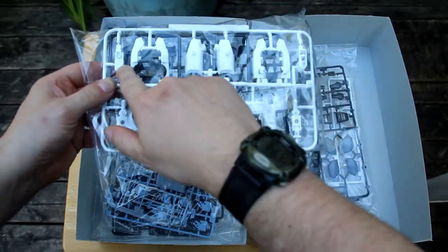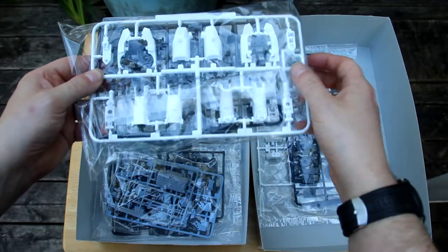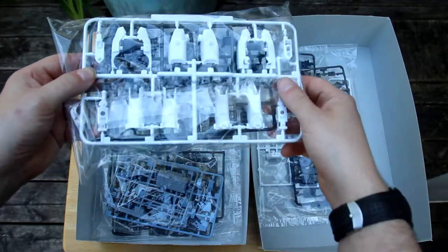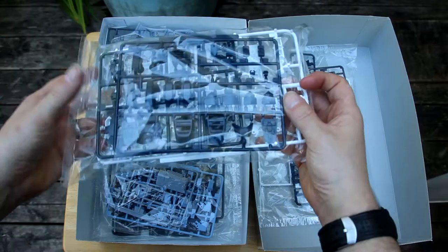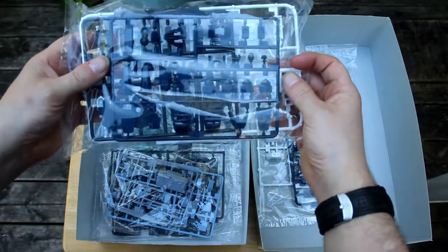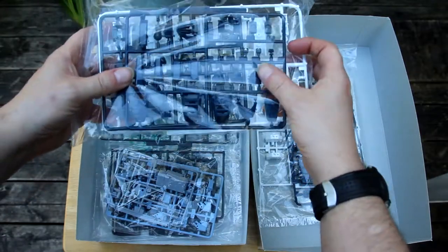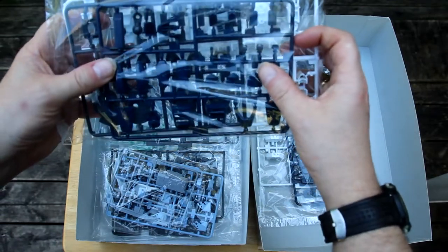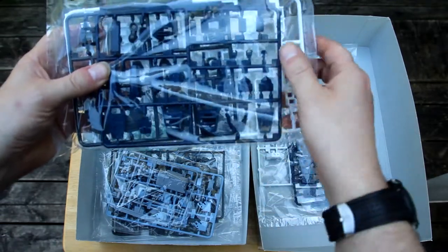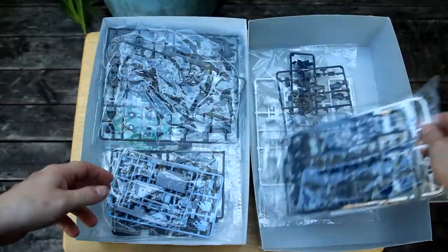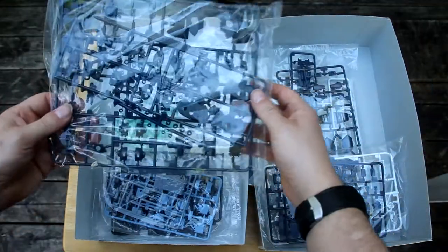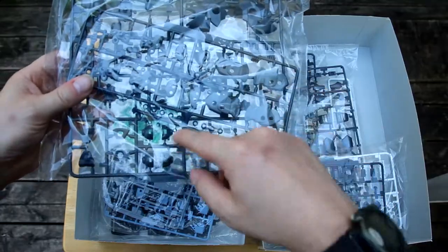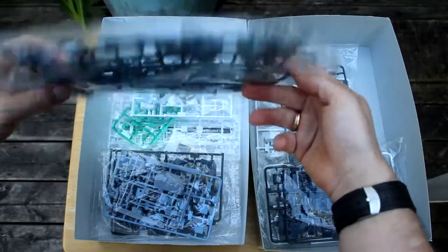That's the sheath for the knife. I think this is for the legs and part of the body. Feet. Got some poly caps, some inner frame.